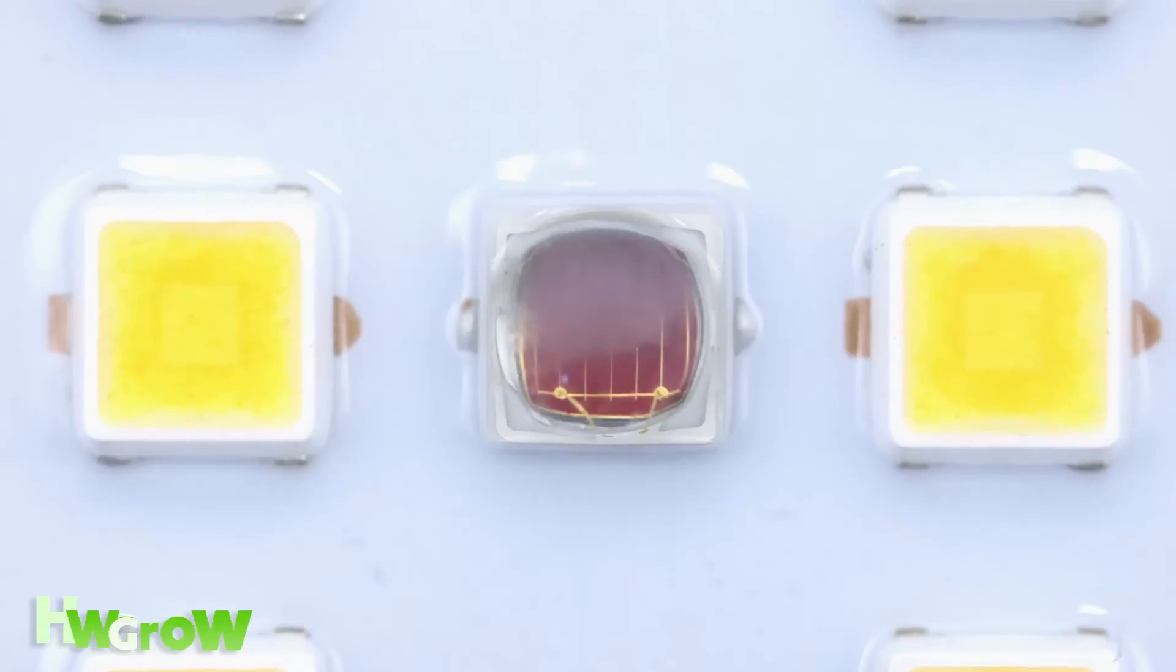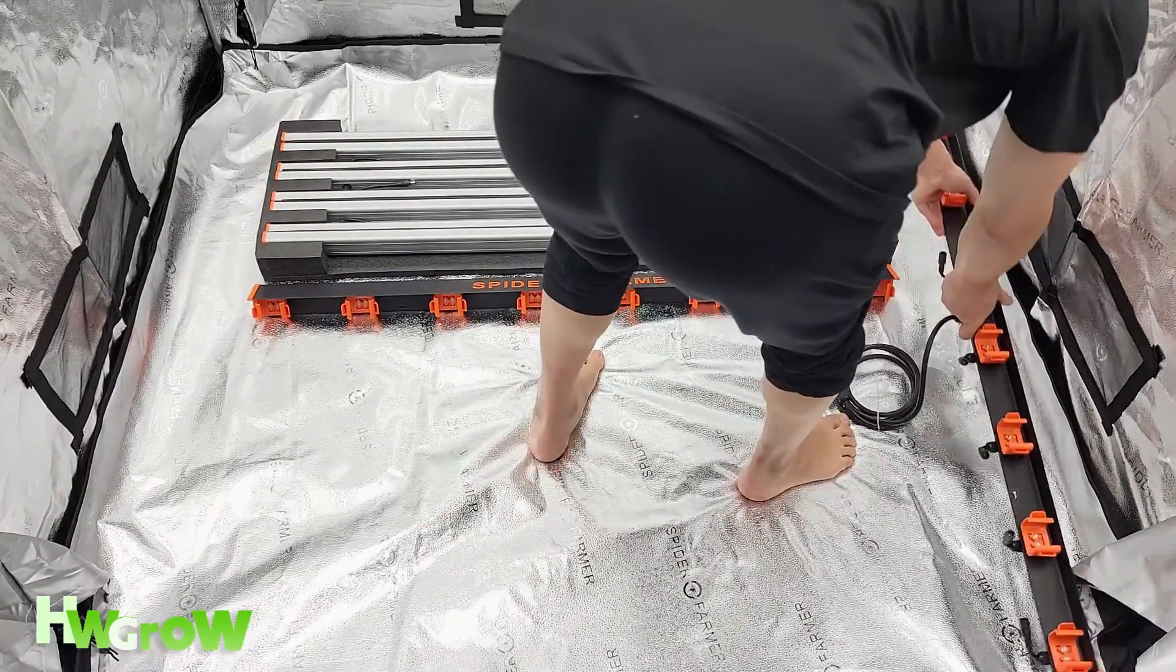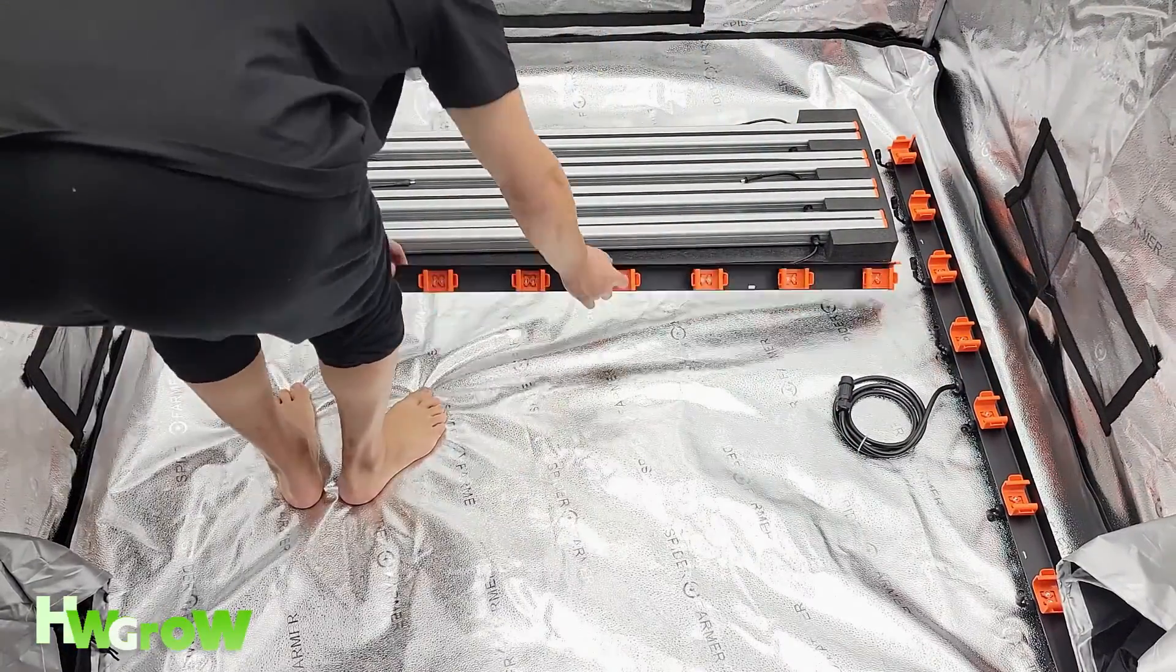The first thing you want to do is place the outer frames on the outside so the brackets are face up and the edges of the frame are facing out.